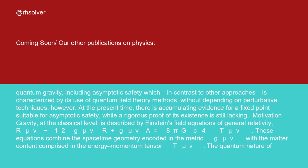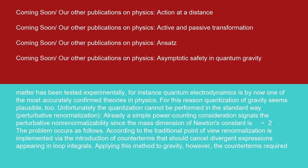Motivation: gravity, at the classical level, is described by Einstein's field equations of general relativity R_μν minus 1/2 g_μν R plus g_μν λ equals 8πG/c^4 T_μν. These equations combine the space-time geometry encoded in the metric g_μν with the matter content comprised in the energy momentum tensor T_μν. The quantum nature of matter has been tested experimentally. For instance, quantum electrodynamics is by now one of the most accurately confirmed theories in physics. For this reason, quantization of gravity seems plausible.